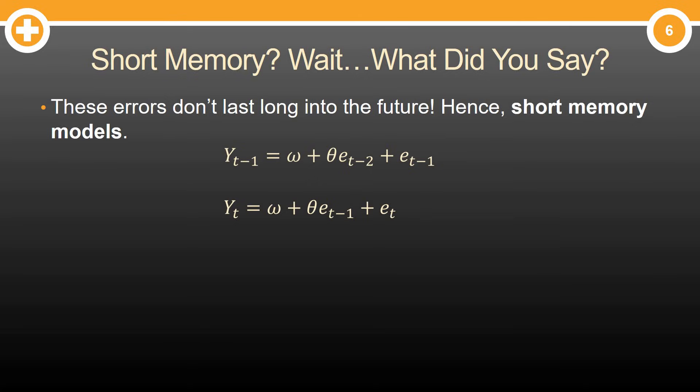What we're saying is that these errors don't last long into the future. Take a look at the two equations I have. We have the equation for yesterday. Yesterday depended on some error yesterday, t minus 1, but also the error the day before yesterday, t minus 2. We'll take a look at the equation for today. Again, it depends on some error today plus the error yesterday.